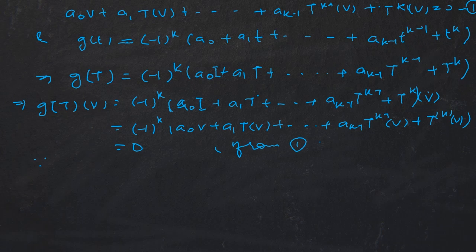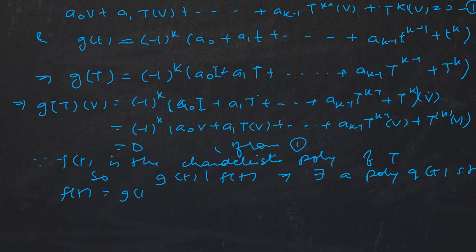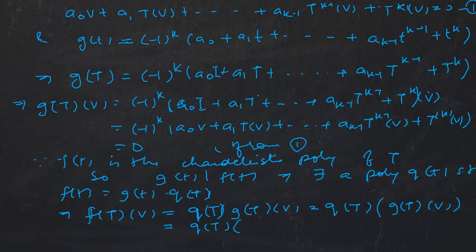Since f(t) is the characteristic polynomial of T, g(t) divides f(t). This implies there exists a polynomial q(t) such that f(t) = g(t)·q(t). Therefore f(T)(v) = q(T)(g(T)(v)) = q(T)(0) = 0. Since v was arbitrary, f(T) = T₀, and the theorem is proved.